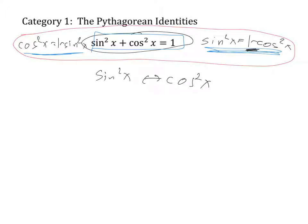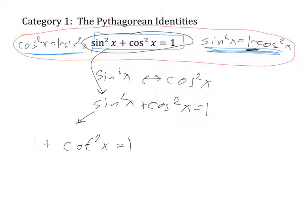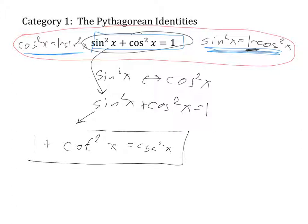There are nine Pythagorean identities and I only covered three of them here. The others can be found by taking sine squared x plus cosine squared x equals one and dividing through by either sine squared or by cosine squared. If I divide each of the three terms by sine squared x, I end up with one plus cotangent squared x equals cosecant squared x. So this is another Pythagorean identity.